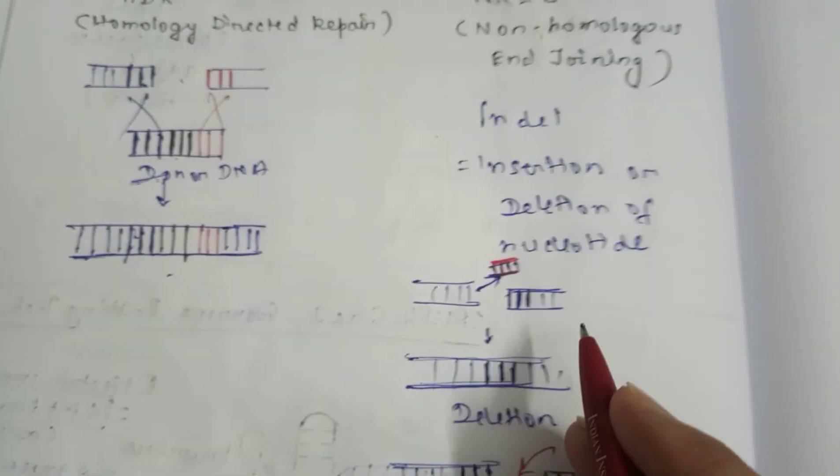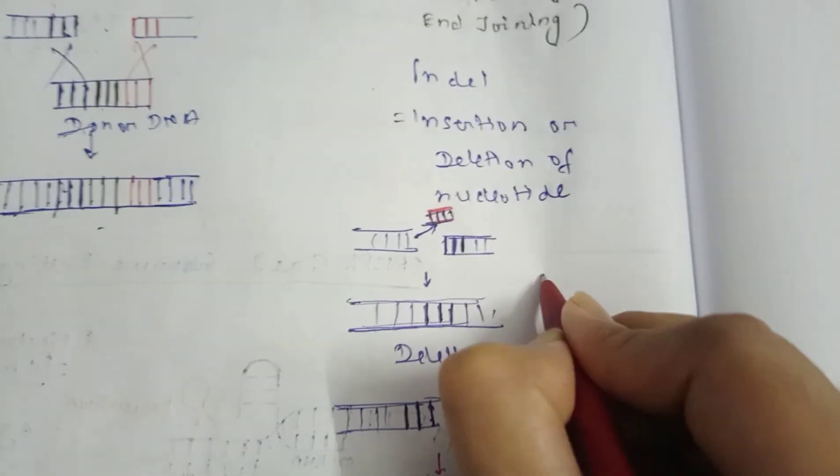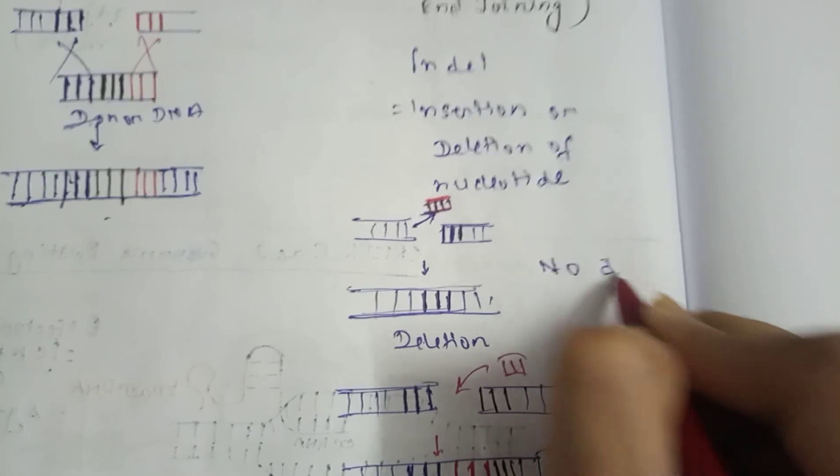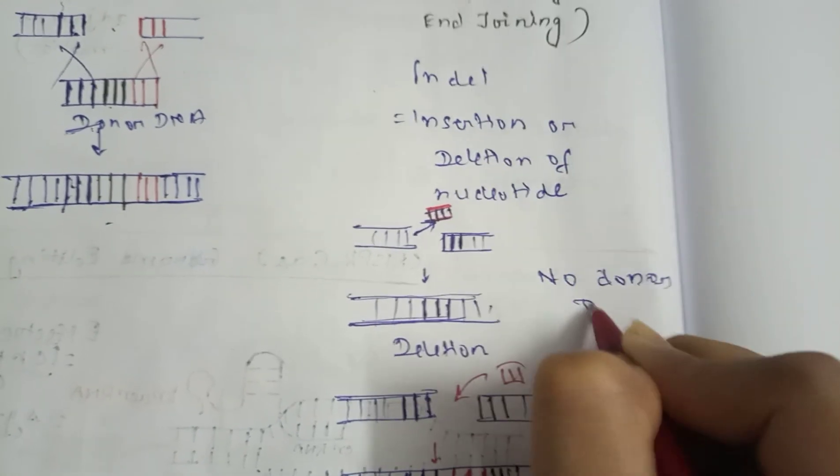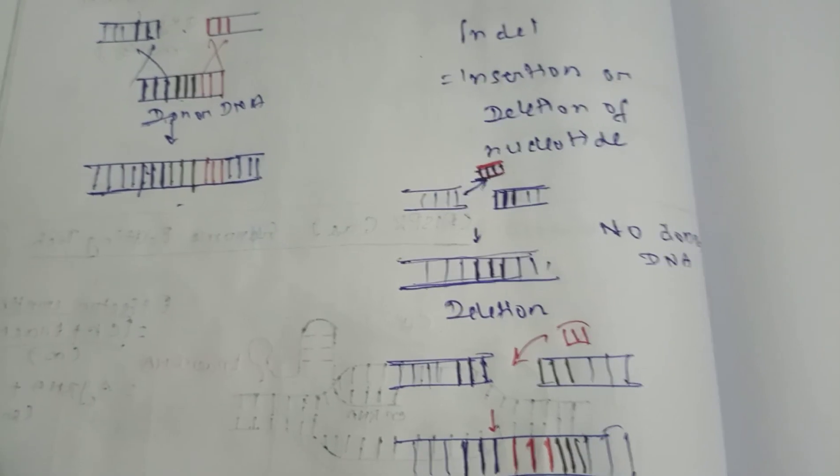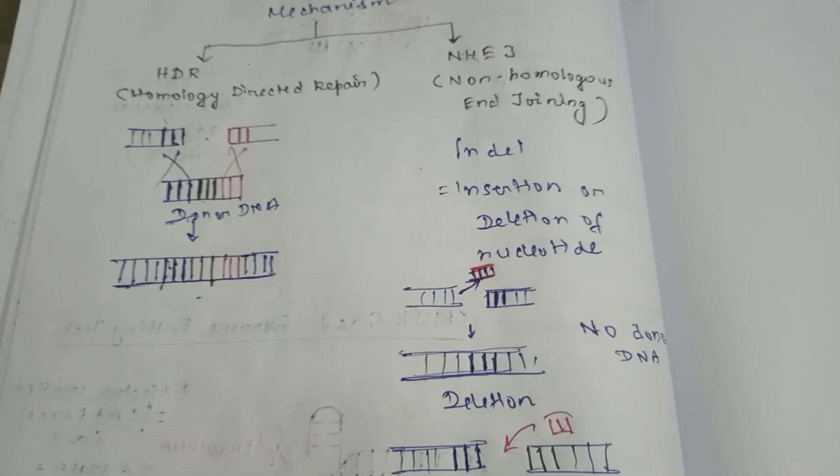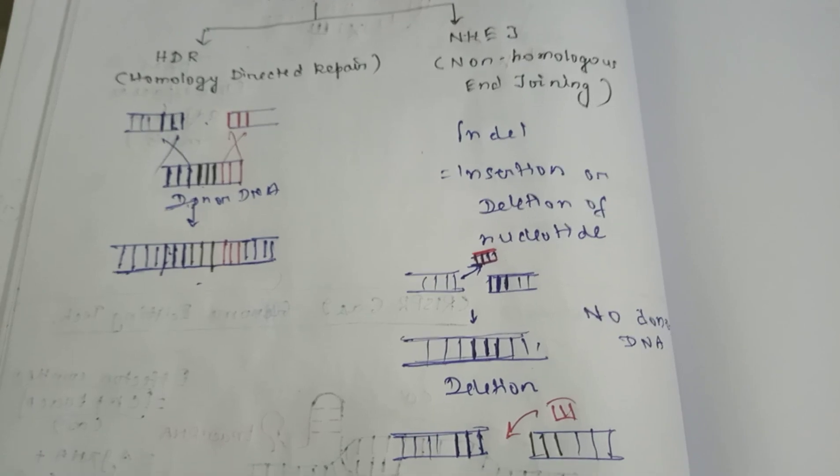So here size is not maintained, and here you can see unlike the HDR there is no donor DNA or template DNA. So these are the repair mechanisms of the CRISPR-Cas system: homology directed repair and non-homologous end joining.